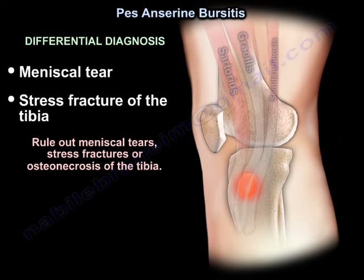The differential diagnosis includes meniscal tear or stress fracture of the tibia. It is important to rule out meniscal tear, stress fracture, or osteonecrosis of the tibia.